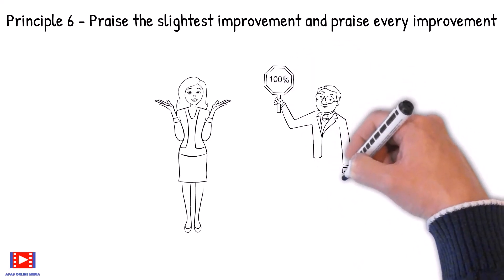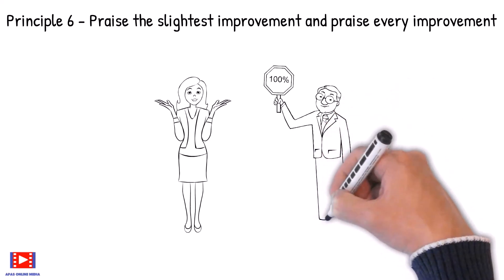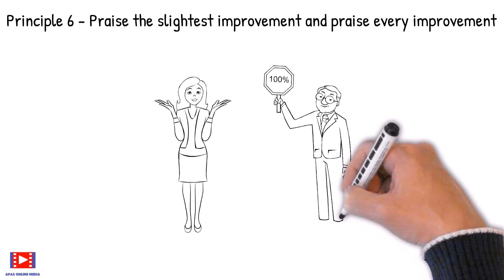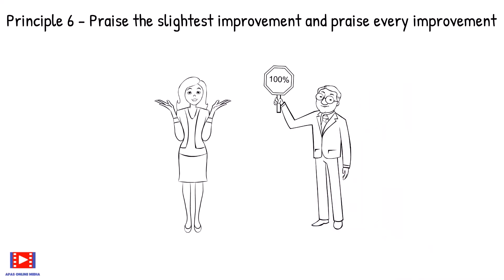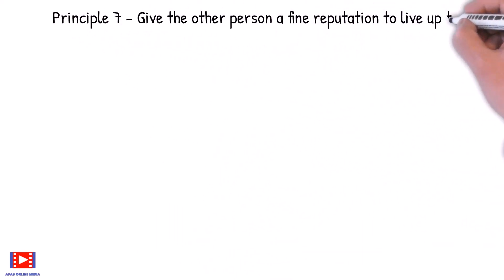Abilities wither under criticism. They blossom under encouragement. To become a more effective leader of people, we should always praise the slightest improvement and praise every improvement. We should be hearty in our approbation and lavish in our praise.